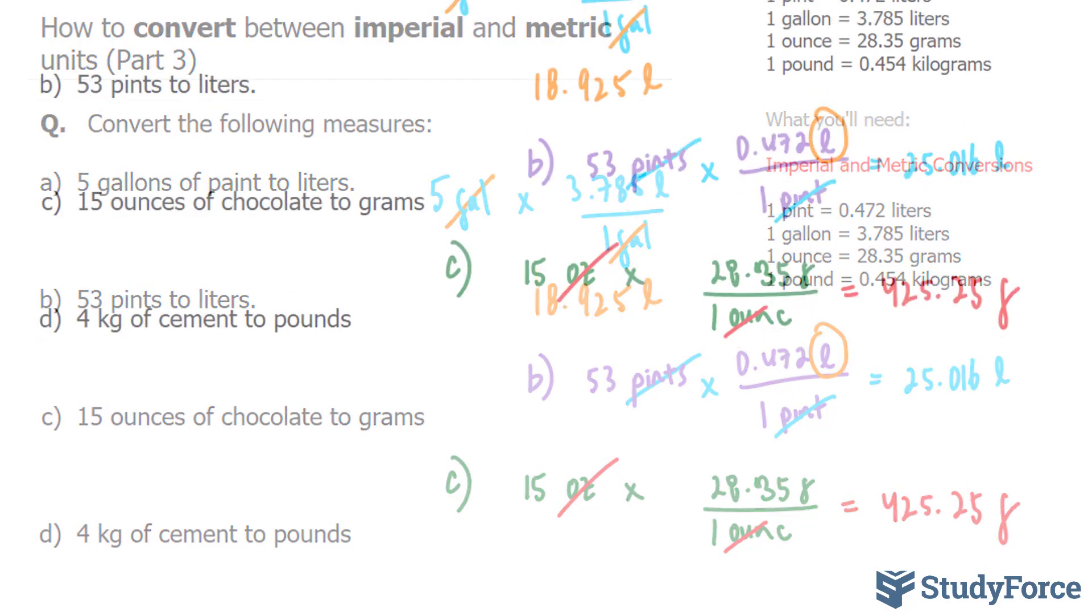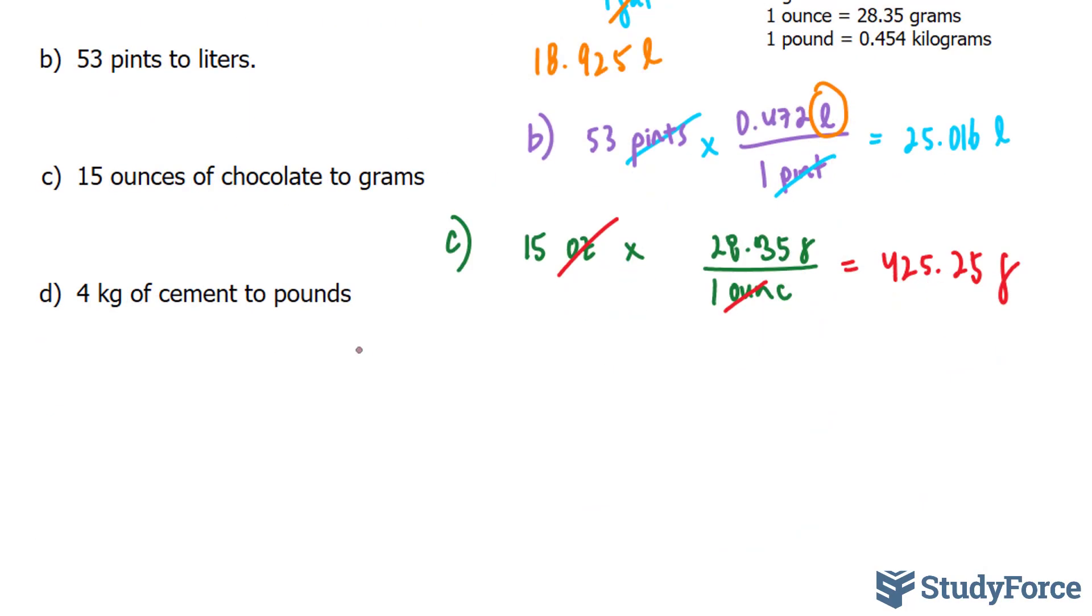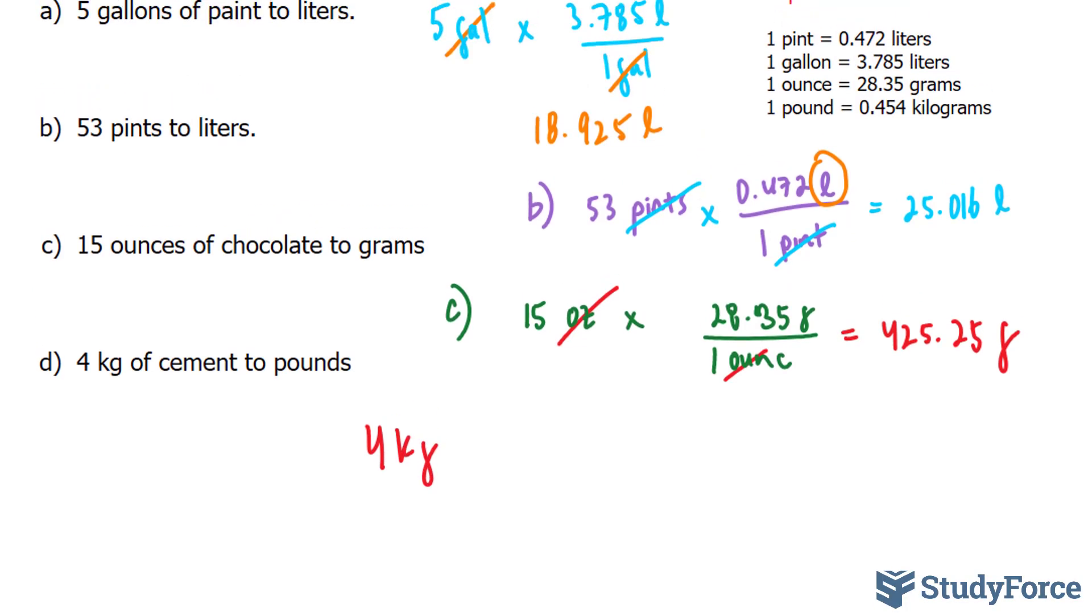And for our last example, we have 4 kilograms of cement, 4 kg of cement, and they want us to convert that into pounds. To do this, we'll use our final conversion ratio.